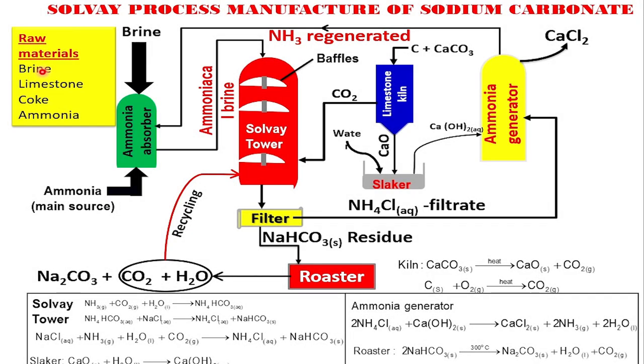The Solvay process involves the manufacture of sodium carbonate. In any industrial process, we start by looking at the raw materials. The main raw materials in the Solvay process are as follows, as you can see from the screen: we have brine, we also have limestone, we have coke — and remember coke is carbon — and ammonia. So the main raw materials are brine, limestone, coke, and ammonia.